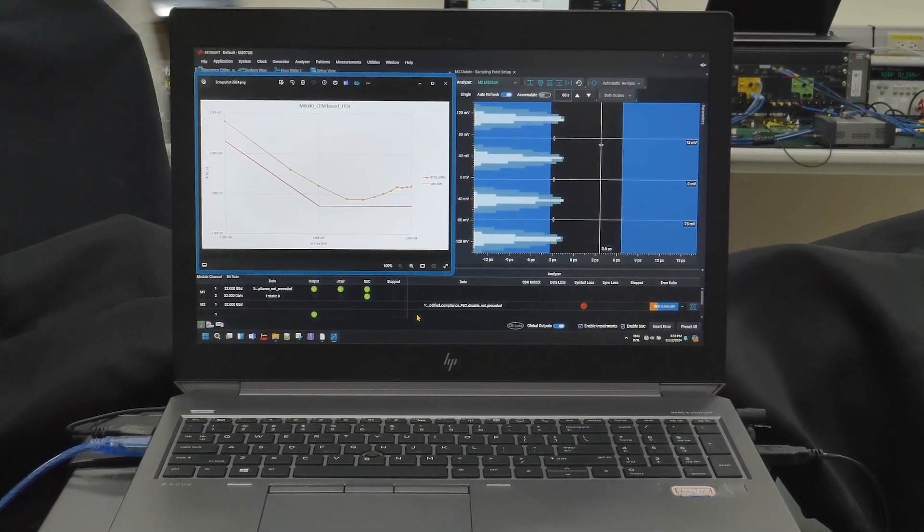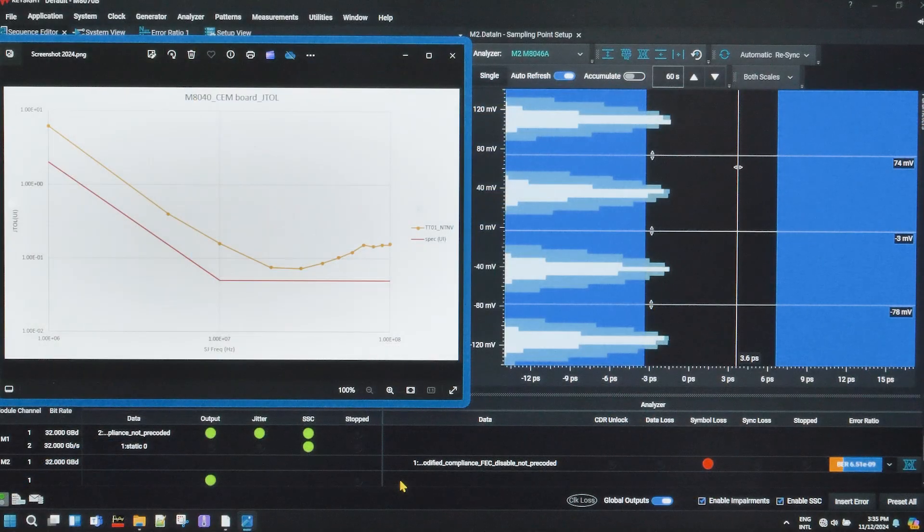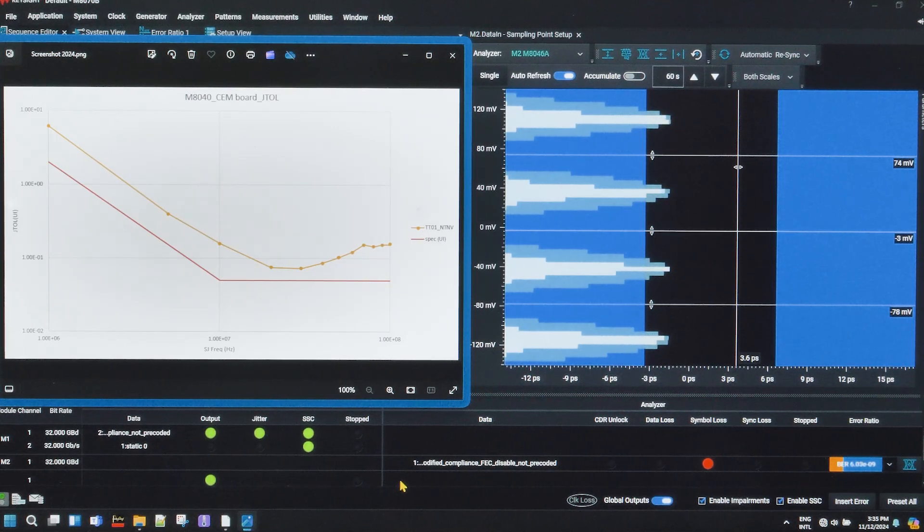Finally, the results. As shown on the screen, the raw bit error rate before FEC is right around one in a billion, which is three orders of magnitude better than the spec requirement of one in a million, while the maximum jitter tolerance is just over 150 milli UI at SJ 100 megahertz.